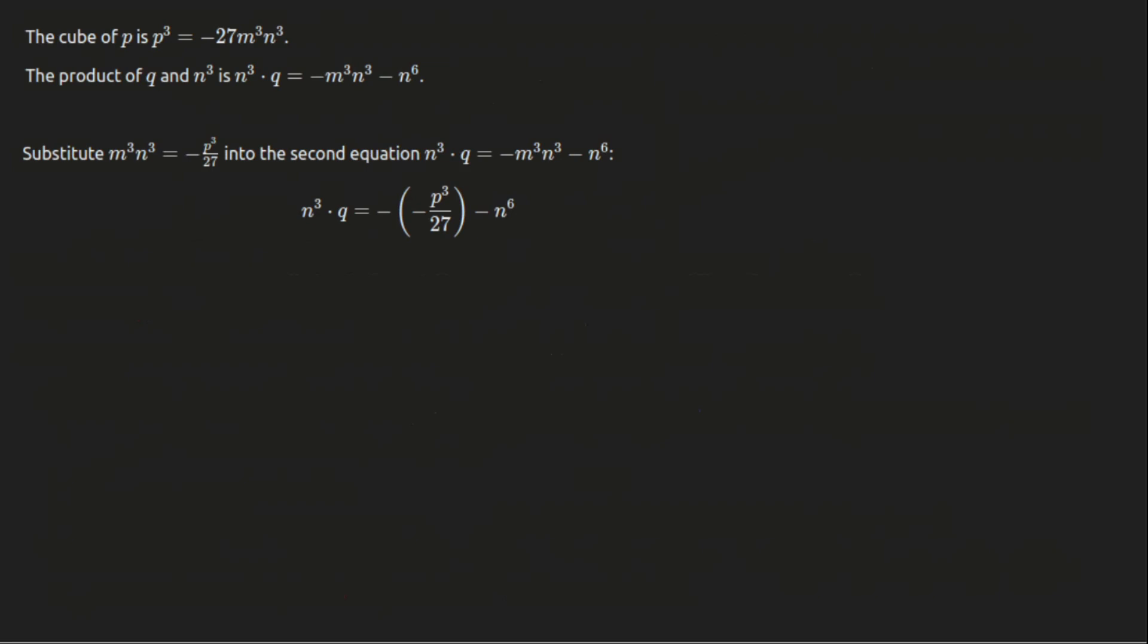Now, let's rearrange this equation and shift terms to one side, setting everything equal to zero. This step turns the equation into a quadratic form, making it much easier to solve.